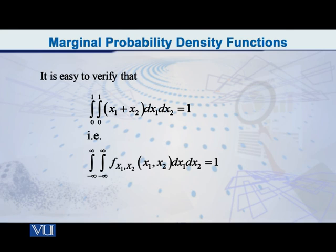So we have this particular joint PDF, and of course you can check for yourself that if you take the double integral of this PDF, both with respect to x1 and x2 from 0 to 1, you can check it yourself that this double integral will come out to be equal to 1.